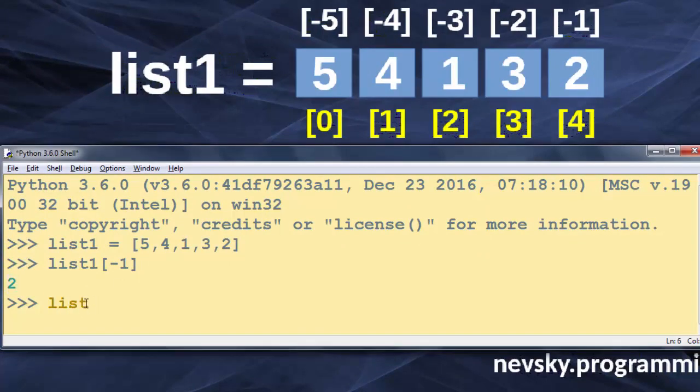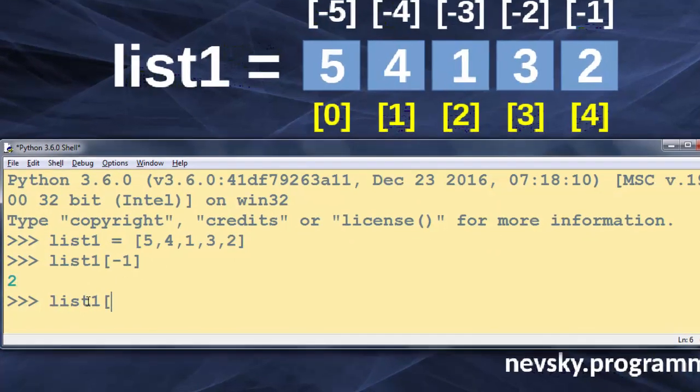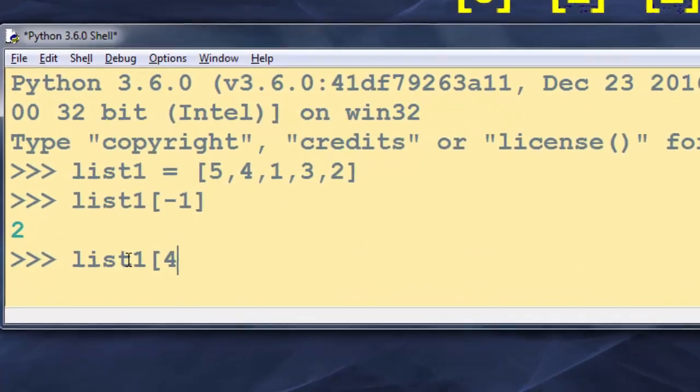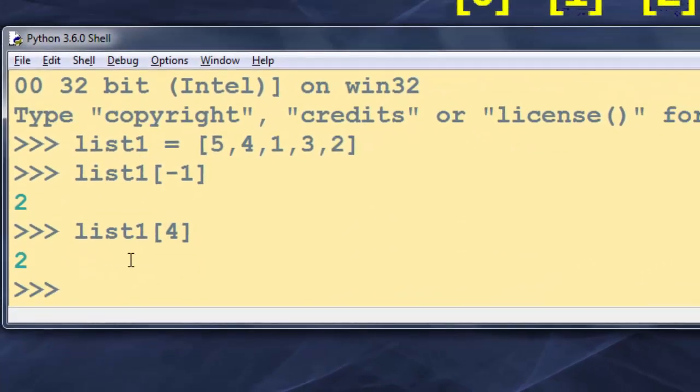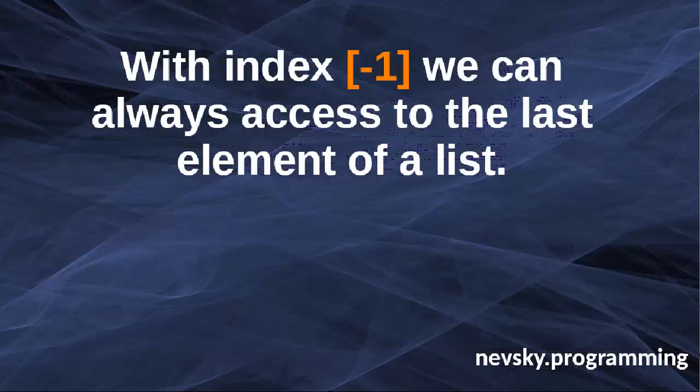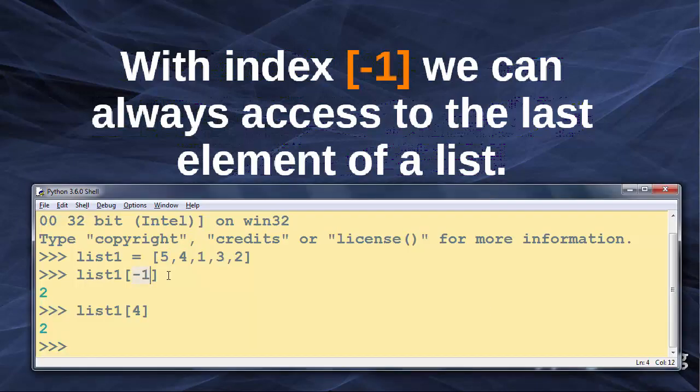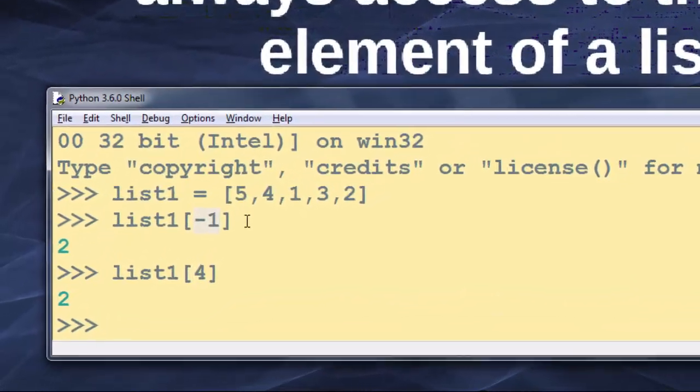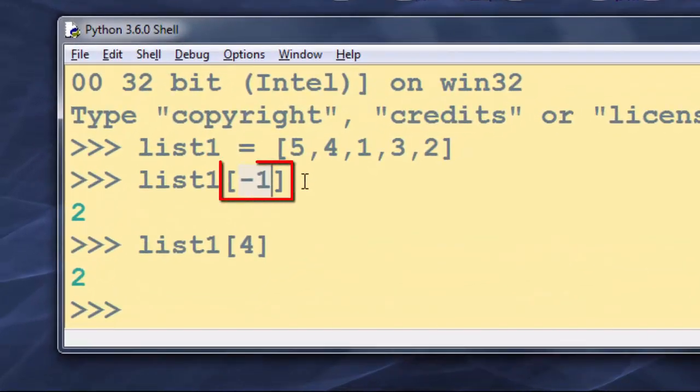Similarly we can get this last element by using index 4 in this example. With index minus 1 we can always access the last element of a list. My suggestion is that it's better to use index minus 1 to get the last element of the list.